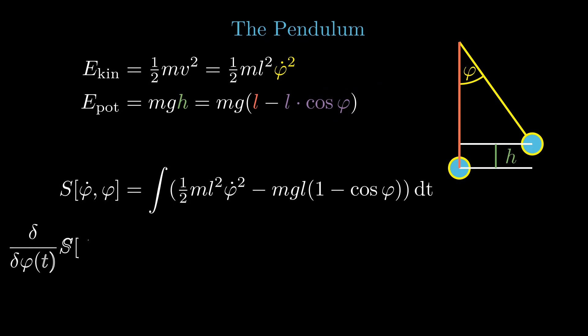How can the variational derivative be calculated? There are three steps to get from the action to the equation of motion. Here we only state the generic recipe. The details can be found in the second video.